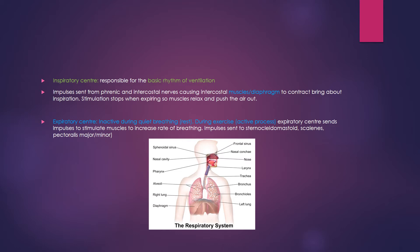Our inspiratory center is responsible for the basic rhythm of ventilation. The medulla oblongata sends impulses down the phrenic and intercostal nerves to the intercostal muscles and down to the diaphragm. These impulses cause these areas to contract — the diaphragm moves downwards and the intercostal muscles move upwards and outwards during inhalation. Stimulation stops when we breathe out, so the muscles relax, move back in, and gently push the air out of the lungs.